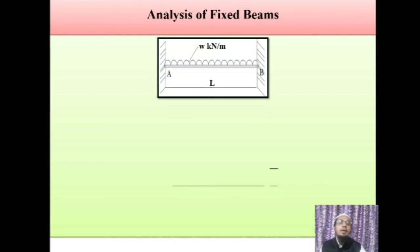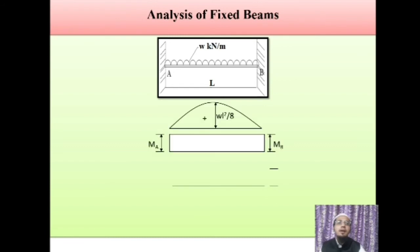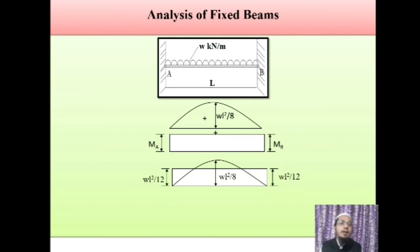Let us draw the diagrams. The loading diagram shows the fixed beam subjected to UDL with span L. By merging the two BMDs — simply supported under loading and under end moments — we get the net bending moment diagram for the fixed beam. The end moments are of magnitude WL²/12 (negative) and the mid-ordinate net moment = WL²/8 − WL²/12 = WL²/24 (positive).